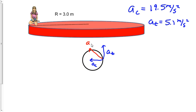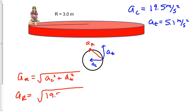I'll use a_r to represent the resultant or total acceleration. So a_r equals, using the Pythagorean theorem, the square root of centripetal acceleration squared plus tangential acceleration squared. So a_r equals the square root of 19.5 squared plus 5.1 squared, which equals 20.2 meters per second squared.